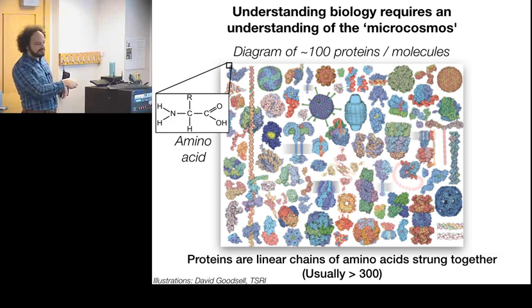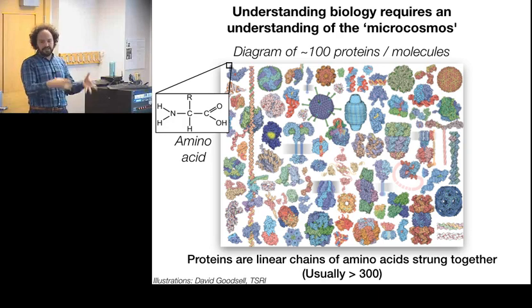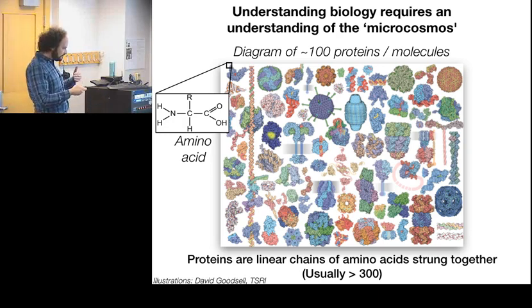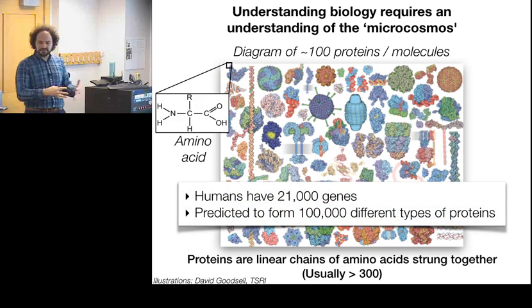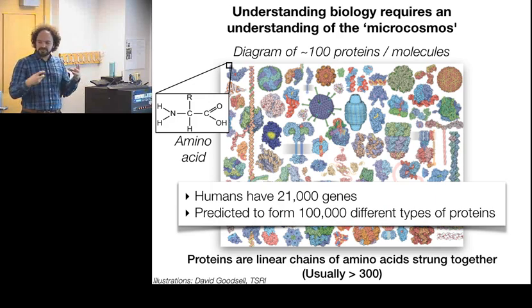Proteins are made up of amino acids — the amino acids you get from the food you eat, incorporated into these specific shapes. Chemistry determines shape; that's the amazing part of biology. We have about 21,000 genes that may form on the order of 100,000 different types of proteins or macromolecular complexes, and most of those structures are currently unknown. That's a big gap in our knowledge of understanding biology.